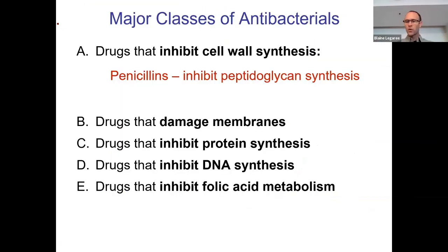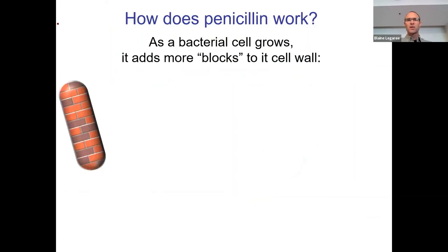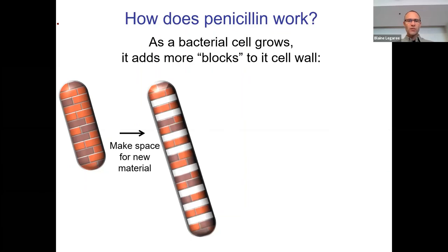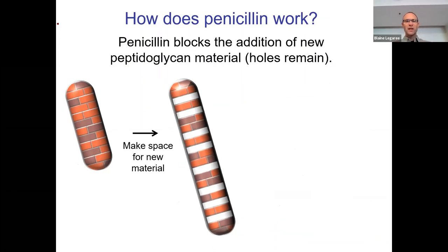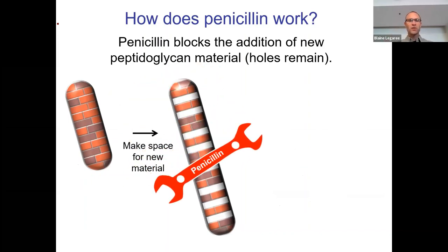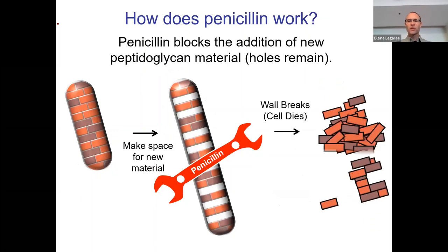So how do penicillins work? The cell stretches out during growth, like any renovation — sometimes you take out drywall before putting new stuff in. As bacteria stretch out, they make spaces for new peptidoglycan material and then fill it in. Penicillin gets into those spaces and throws a monkey wrench into the whole machinery — all these holes form and the whole thing just bursts open.